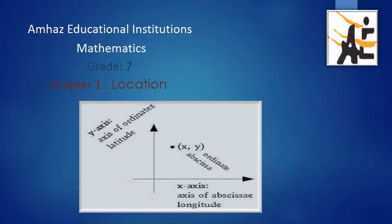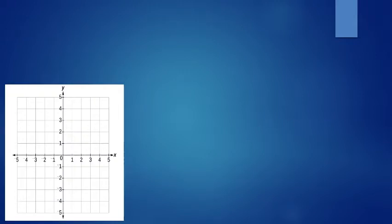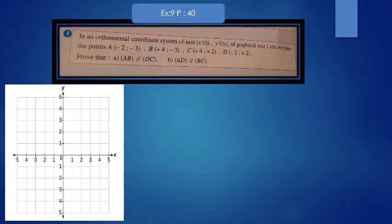Good morning, dear. Please put your homeworks in front of you and let's together correct exercise 9. The question is, in an orthonormal coordinate system of x'x y'y of unit 1 cm, we place the points A(-2,-3).